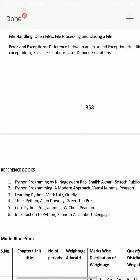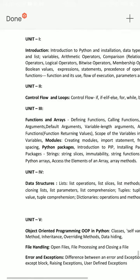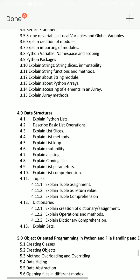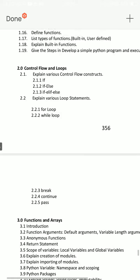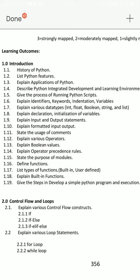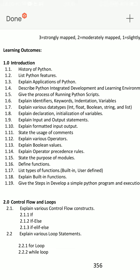According to the chart, I am going to start the important questions. First of all, Unit 1. Unit 1 has an explanation for the important question: 1.7 — explain various data types. That is the important 8 mark question: int, float, boolean, string, list. You can explain these 5. That is the first important question.